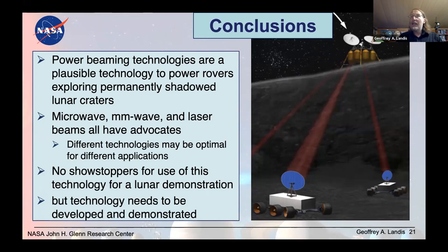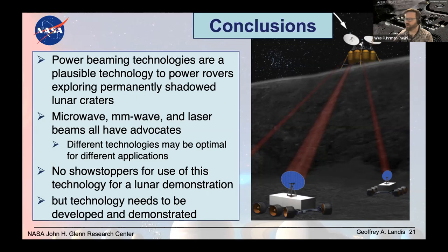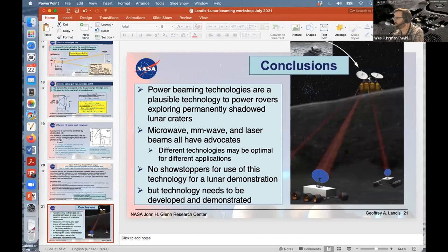So with that, that's a brief introduction to power beaming for the lunar crater application. The quick conclusion, it's a plausible technology to power rovers in the permanently shadowed craters. All of the technologies, microwave, millimeter wave, and laser have advocates. Different technologies may be optimal for different applications, depending on how much power and how far you're beaming it. There don't seem to be any showstoppers for the use of this technology for a lunar demonstration. But the technology does need to be developed and demonstrated in space. And with that, I'm open for questions. Great, go ahead and post your questions into the Q&A, and we will start pulling them through.